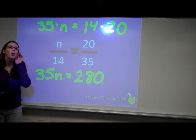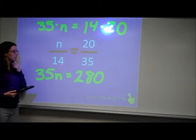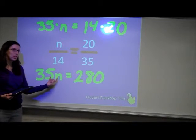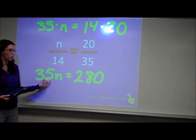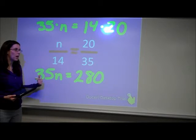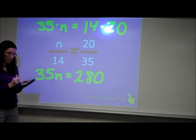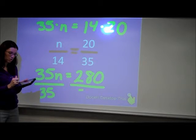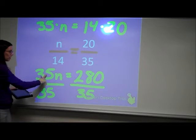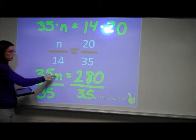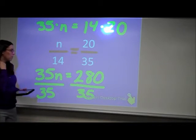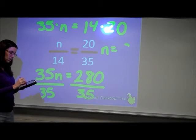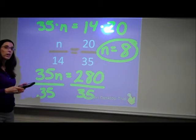So now, what am I going to do to solve this? Thinking back to solving equations, with these being written right by each other, that means we're multiplying. So to solve that, you're going to divide. So I want to divide both sides by 35, the coefficient of our variable, whatever we're multiplying n by. And you would get that n is equal to 8.